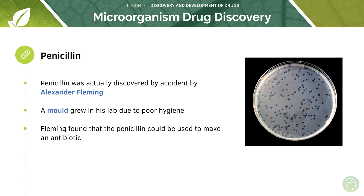When he came back he noticed something rather unusual on one dish. It was dotted with colonies apart from an area where a blob of mould was growing, and around this blob of mould was a clear lysed area — a clear area in the gel within which the bacterial cells around had been destroyed. As you can see in the diagram, there are areas where there are no bacteria. The mould was later identified as a strain of penicillin. To Fleming it appeared as if the mould had secreted something that inhibited bacterial growth, and he later found that his 'mould juice' was capable of killing a wide range of harmful bacteria — and this came to be known as penicillin.